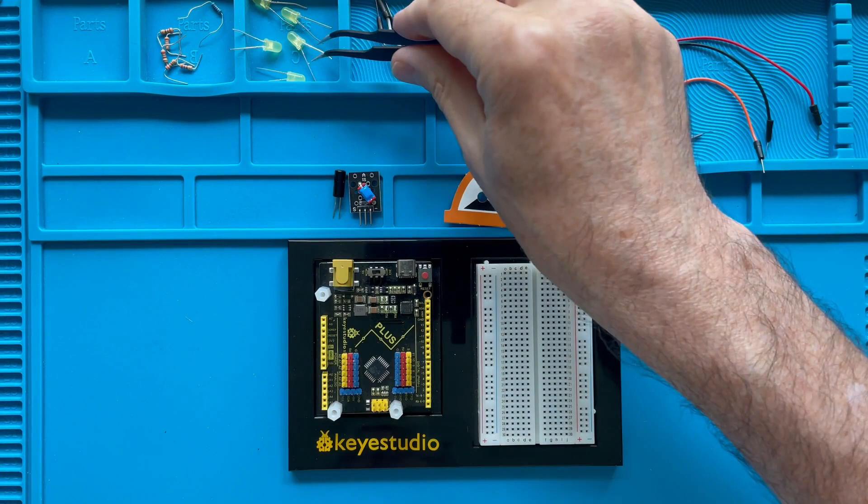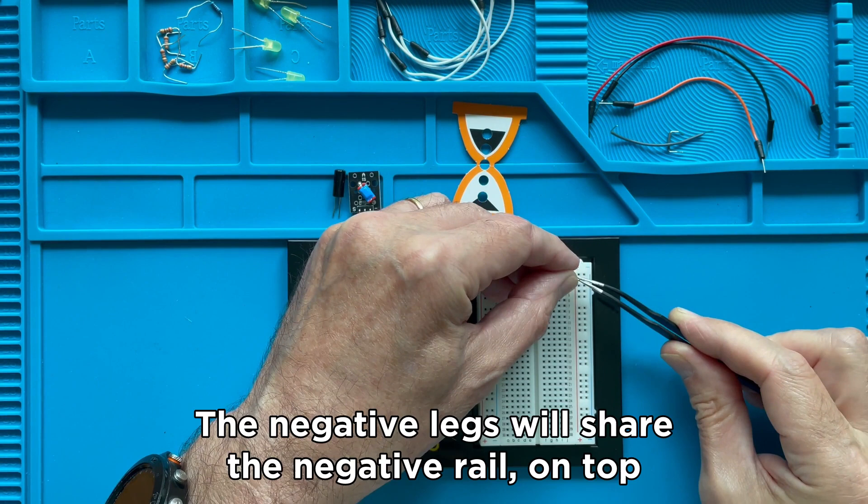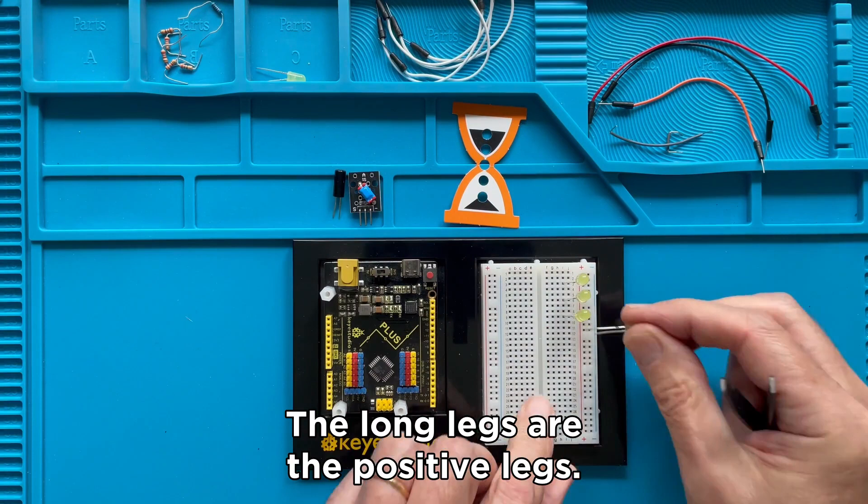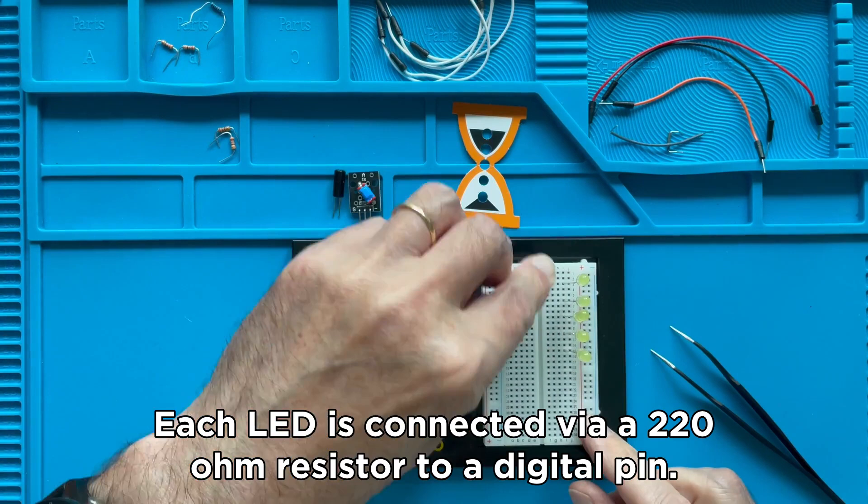Let's start building. First, we install the LEDs. The negative legs will share the negative rail on top of the breadboard. The long legs are the positive legs. Each LED is connected via a 220 ohm resistor to a digital pin. In our project, we use the pins 7, 2, 11.